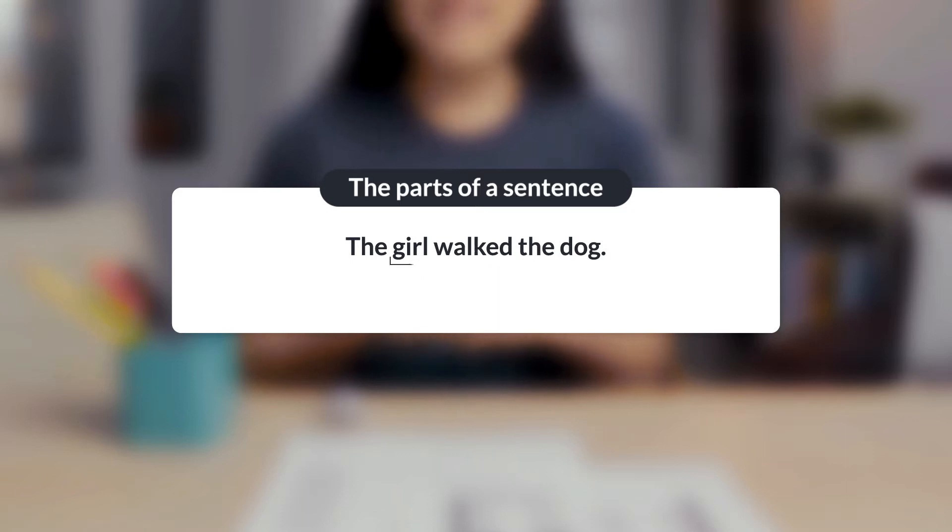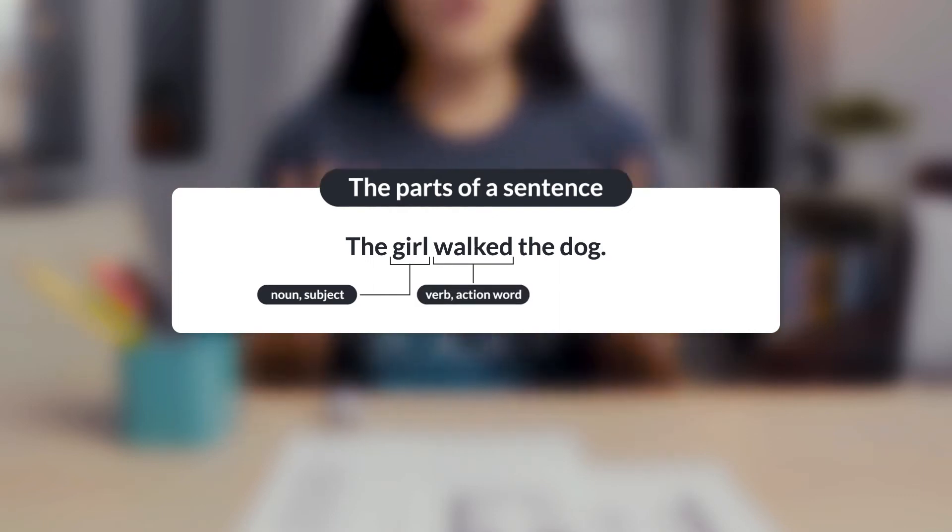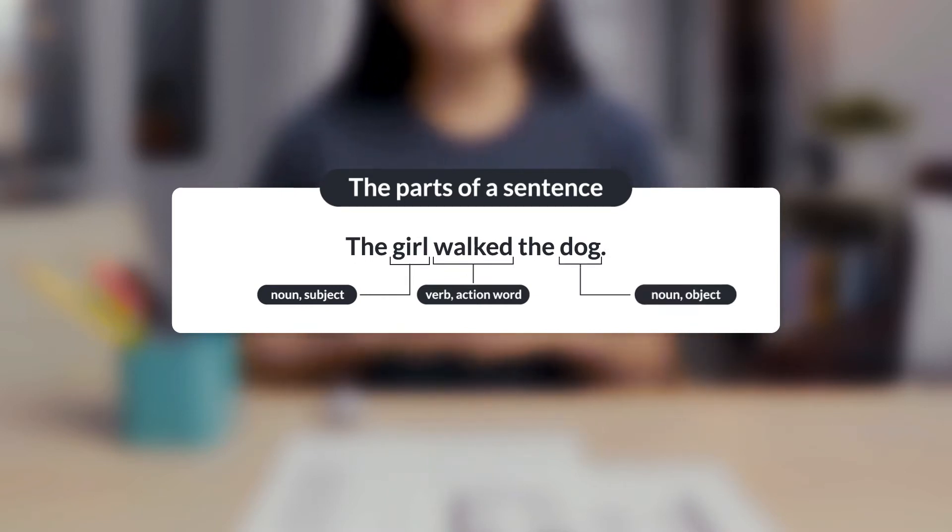Girl is a noun and the subject of the sentence. What did the girl do? She walked, which is the verb or the action word. Finally, what did she walk? The dog, which is a noun and the object of the sentence.